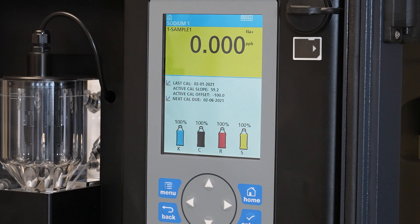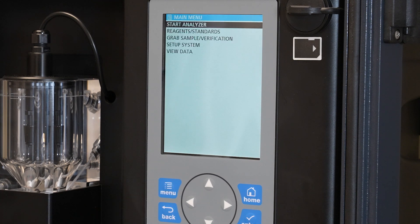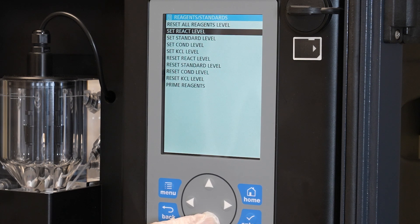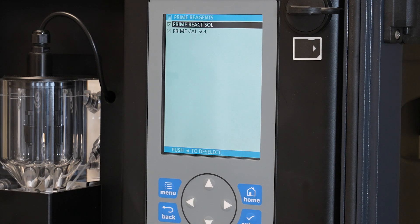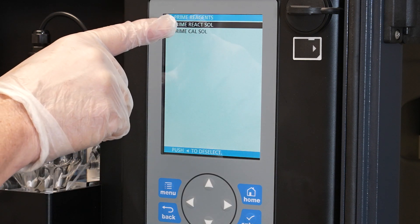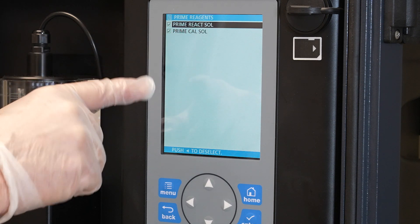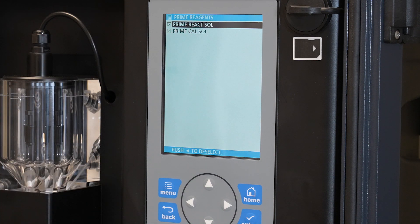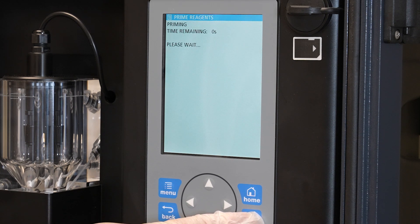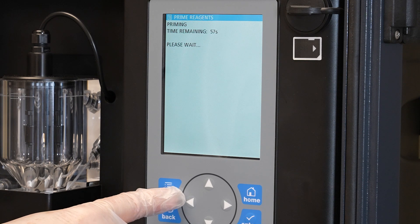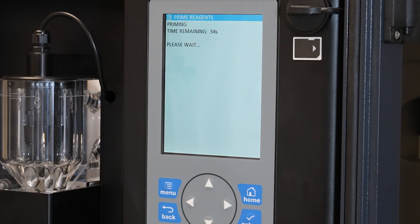The next thing we want to do is actually prime the reagents to make sure all the tubing and everything is full. Again we go back to menu. Reagents and standards. And we move down to prime reagents. And all it's going to do is prime the reactivation solution, the KCL solution. The reference electrolyte is by gravity. The DIPA is by the vapor pressure. So we press enter for these. And that will actually start the priming operation. You'll notice it takes about a minute for the priming to take place. Once that's done, you can move back to regular normal operation by starting the analyzer.